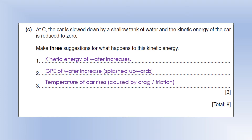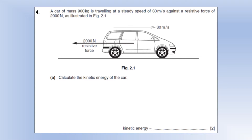Sound shouldn't be included as an answer, because it accounts for such a small amount of wasted energy generally. A car of mass 900 kilograms is travelling at a steady speed of 30 metres per second against a resistive force of 2,000 newtons. Calculate the kinetic energy of the car — it's half mv squared, giving us 405,000 joules, or 405 kilojoules.